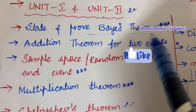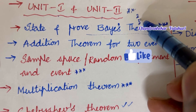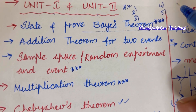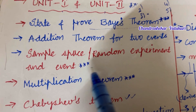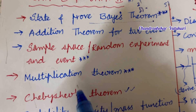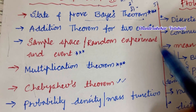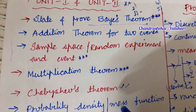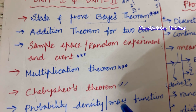Bayes' theorem is said to be the topmost and most important question. The addition theorem for two events may be the 3rd question. Sample space, random experiment, and events are said to be the topmost questions. Multiplication theorem, Bayes' theorem, probability density function, and probability mass function are related to these concepts. You will be getting two questions for sure from these concepts — that may be a theorem, a problem, or a statement.